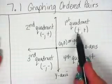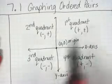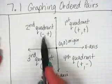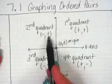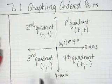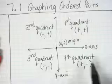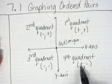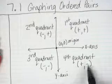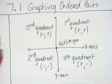In the first quadrant, your x is positive and your y is positive. Second quadrant, your x is negative and your y is positive. Third quadrant, they're both negative. And in the fourth quadrant, the x is positive and the y is negative.